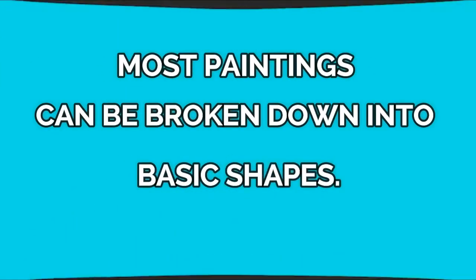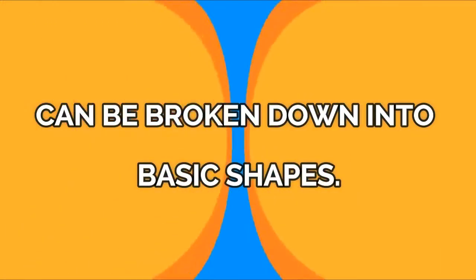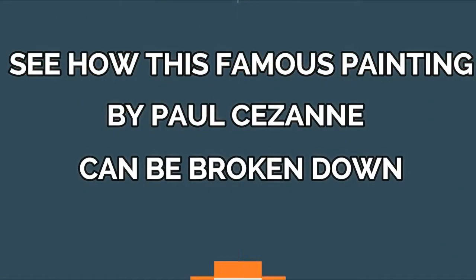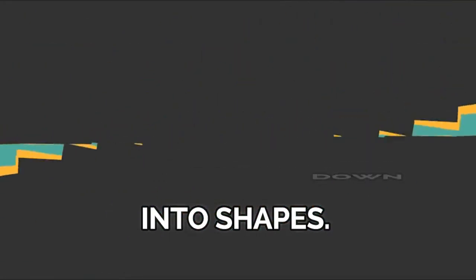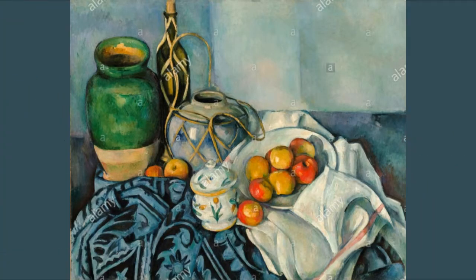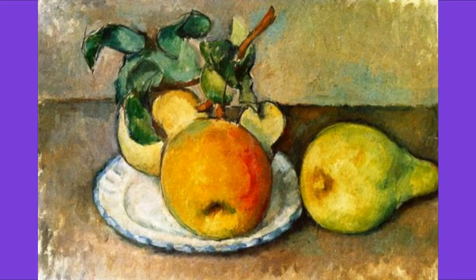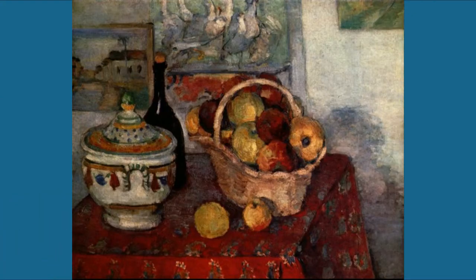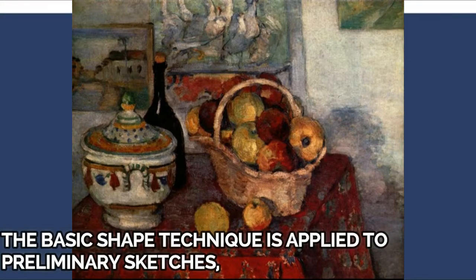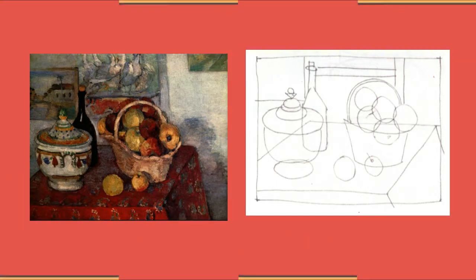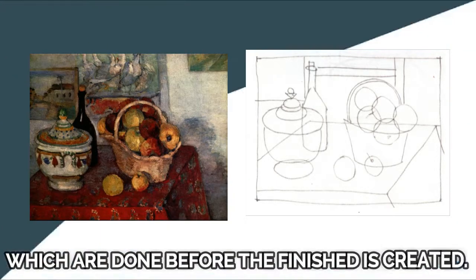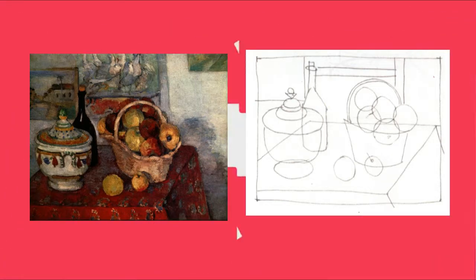Most paintings can be broken down into basic shapes. See how this famous painting by Paul Cezanne can be broken down into shapes. The basic shape technique is applied to preliminary sketches, which are done before the finished piece is created.